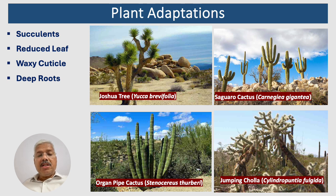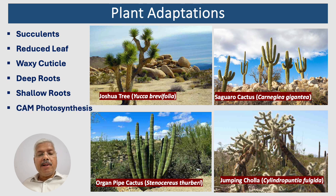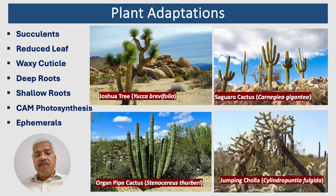CAM photosynthesis is a special type of photosynthesis that allows plants to open their stomata at night to absorb carbon dioxide and close them during the day to reduce water loss. Ephemerals are plants with short life cycles that germinate and bloom quickly after rainfall, completing their life cycle before the dry season returns. Cacti are known for their spiny appearance and ability to store water in their stems. Succulents — plants with fleshy leaves or stems that store water, such as aloe vera and jade plants — are another example. The Joshua tree is an iconic desert tree with distinctive twisted branches.